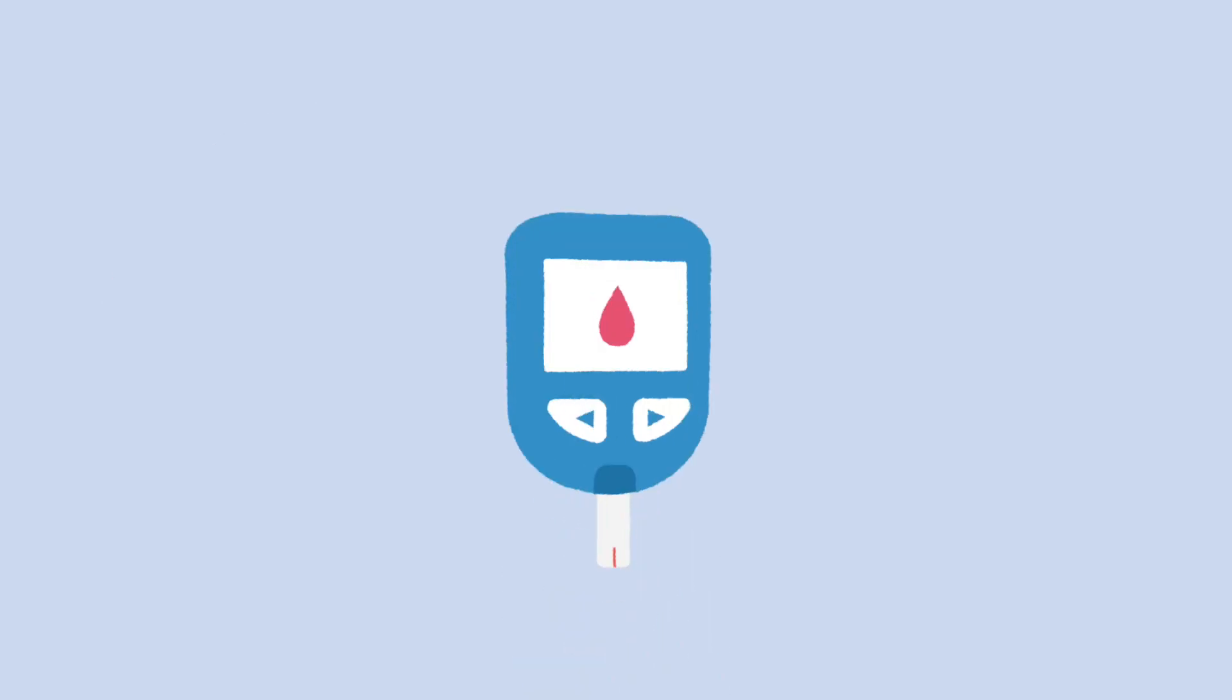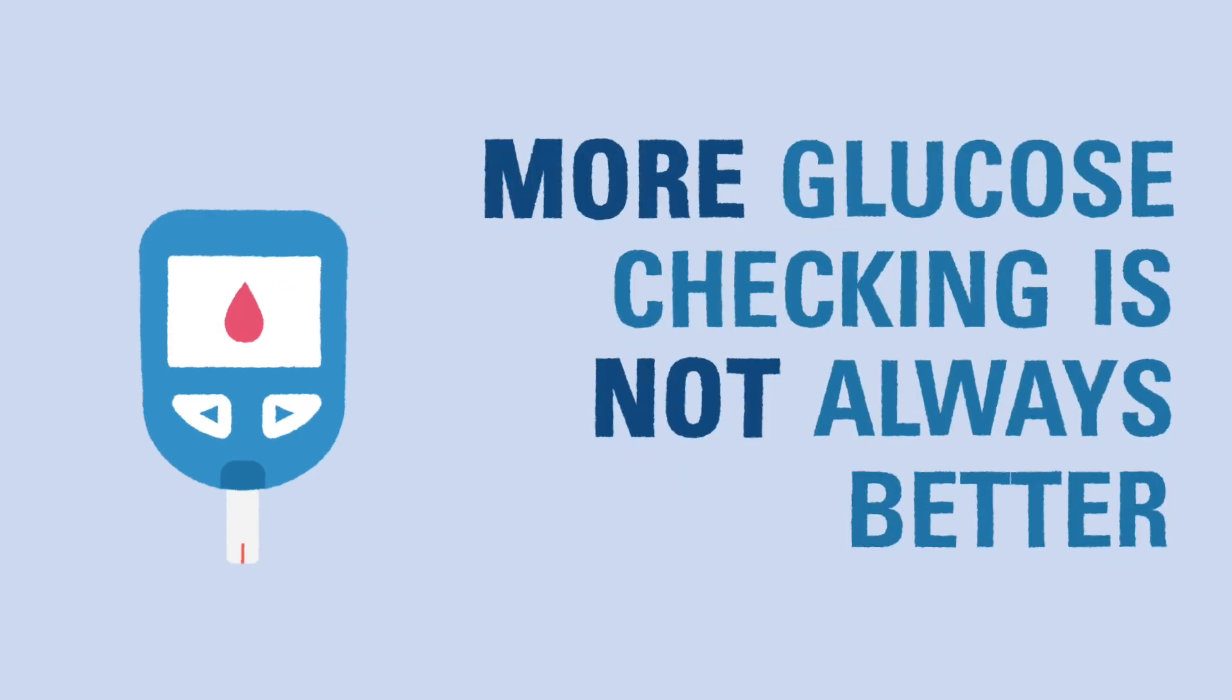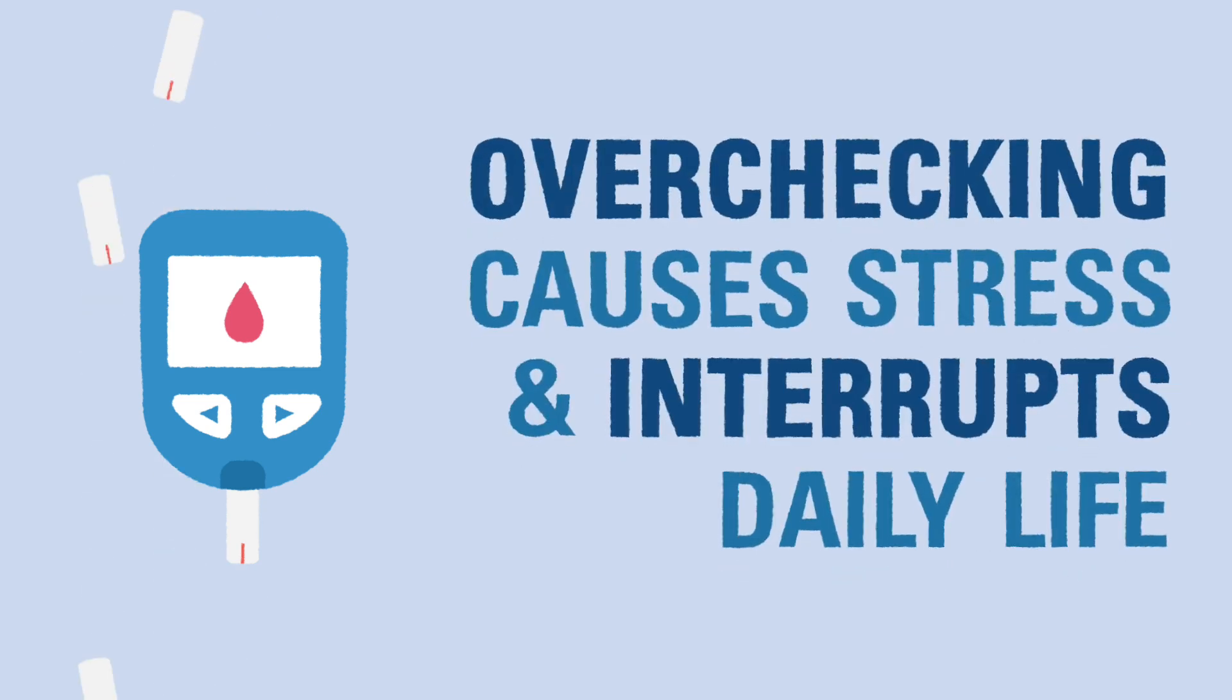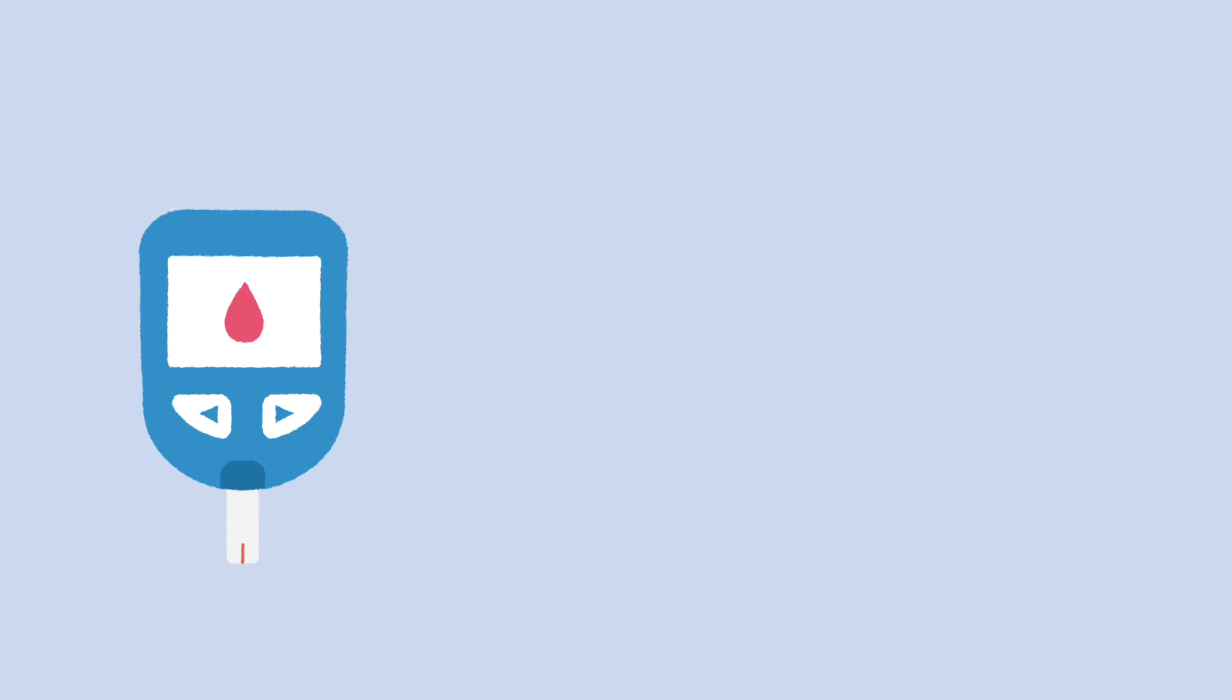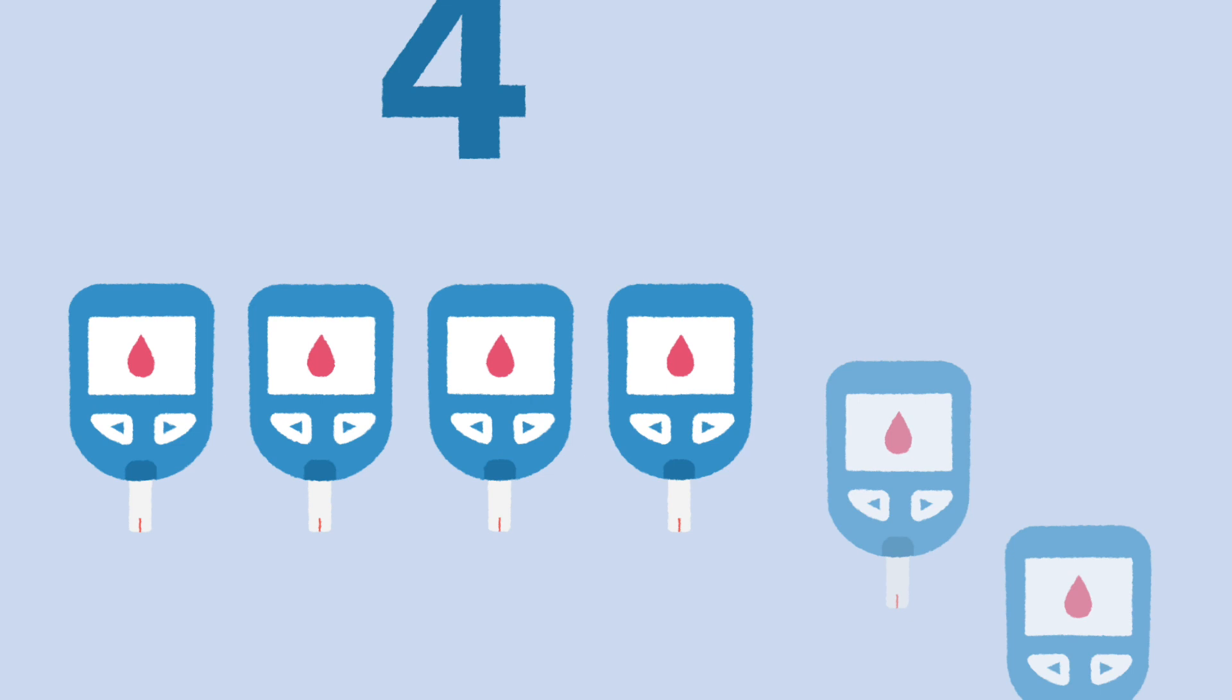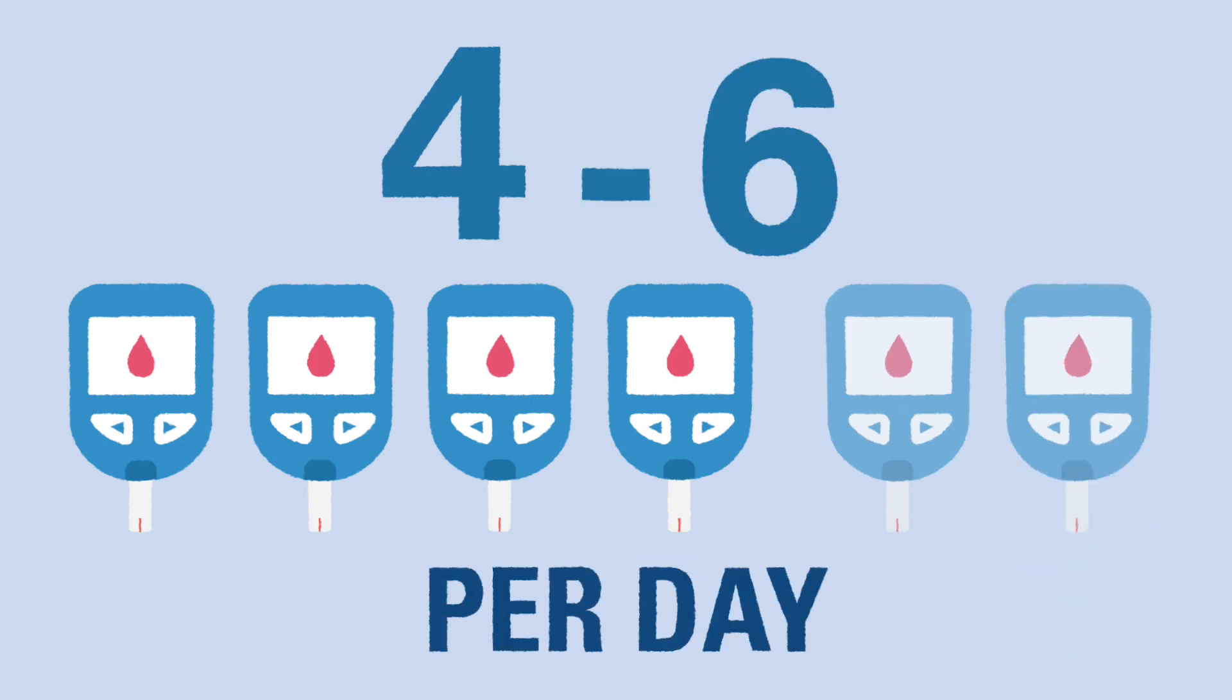While it's important to monitor blood sugar throughout the day, more blood glucose checking is not always better. Sometimes families feel anxious when they don't know their blood glucose, and this leads to over-checking, which can cause stress and interrupt daily activities the child enjoys. Keep in mind, we recommend checking blood glucose between four to six times per day. Insulin takes time to work, and food takes time to be broken down, so blood glucoses are always changing, and checking too often might just be confusing.